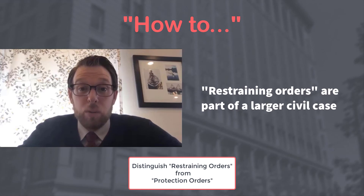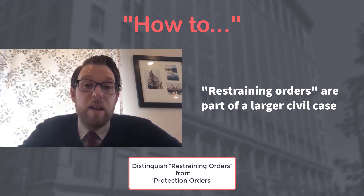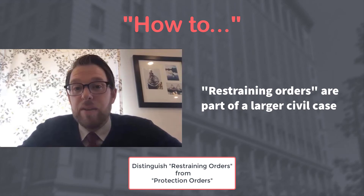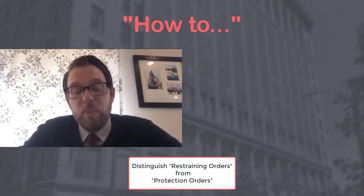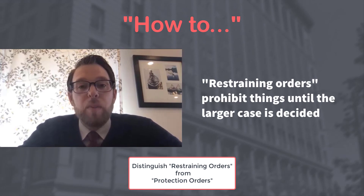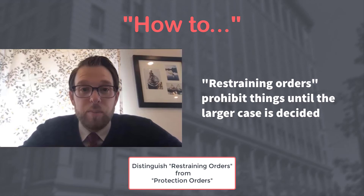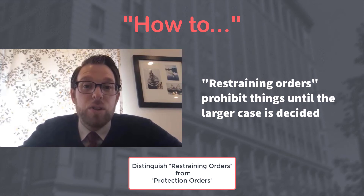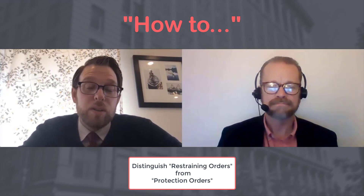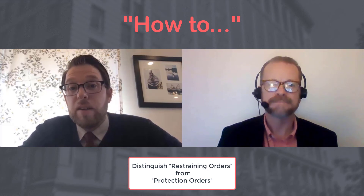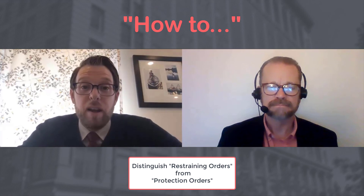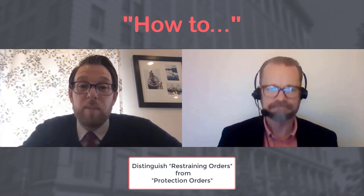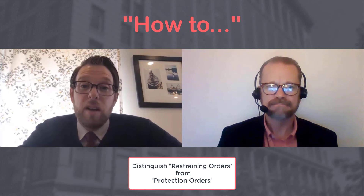While a protection order will restrain someone's ability to do things if granted, a restraining order has to do with a different part of civil procedure. In a larger lawsuit, one of the parties might tell the court: this case will take a year before trial, and in the meantime the court should take certain action. The showing required is that there will be irreparable harm if the court won't act. For example, our state has sought restraining orders against the federal government many times over the last several years, and sometimes they're successful — resulting in an injunction that limits a federal practice from continuing.